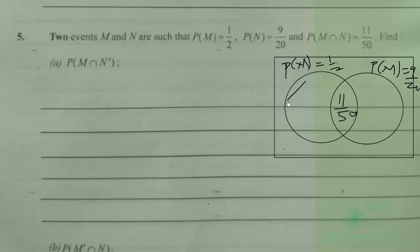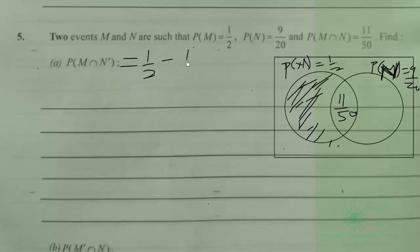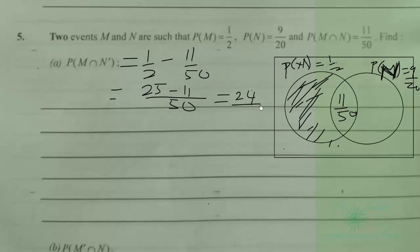M intersection N prime is the region of M outside N. This equals 1 over 2 minus 11 over 50. The LCM is 50; 2 goes into 50 twenty-five times, giving 25 minus 11, which equals 14 over 50, or simplified, 7 over 25. So the probability of M intersection N prime is 7 over 25.